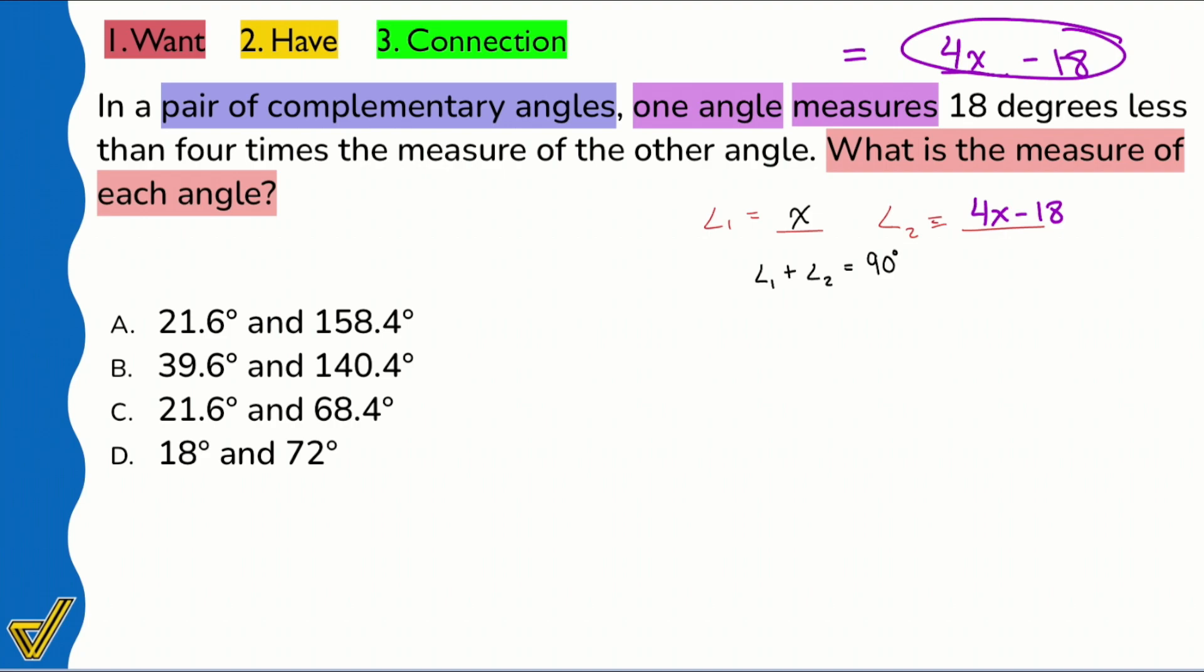So the setup is way too important. So if you need to pause and rewind, go ahead and do that. The setup is way, way, way too important here. So if we just name the first angle X, the other angle, again, 18 less than four times the other, 18 less than four times the other. Booyah, and we're good. Why are we good? Well, because we have all the clues that we need. Now we can figure out what the angles are.